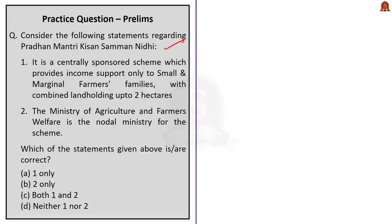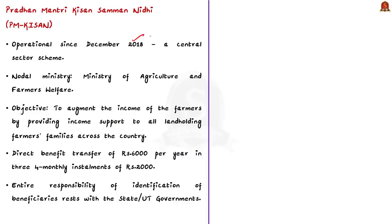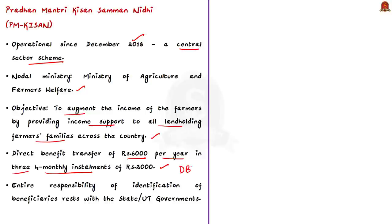This question is based on a news article stating that almost 90,000 ineligible beneficiaries under the PM Kisan Nidhi scheme have been identified in Tamil Nadu and the recovery of cash subsidy transferred is under process. Let us discuss in detail about Pradhan Mantri Kisan Samman Nidhi or PM Kisan. Operational since December 2018, it is a central sector scheme with 100% funding from the Government of India. The Ministry of Agriculture and Farmers Welfare is the nodal ministry. The scheme augments the income of farmers by providing income support to all land-holding farmers' families, transferring Rs. 6000 per year in three four-monthly instalments of Rs. 2000 directly into bank accounts.